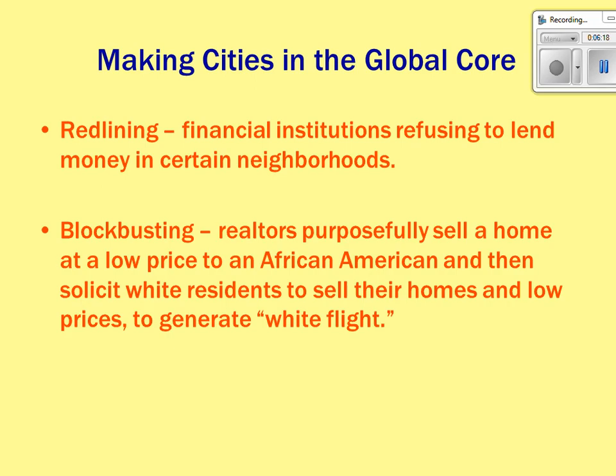Redlining is when banks refuse loans to people living in certain areas. Banks had maps with red lines drawn around certain neighborhoods, and if someone's residence fell within those lines, they would be denied a loan on the assumption they were less likely to repay it. It is illegal to deny someone a loan based solely on where they live or want to live.